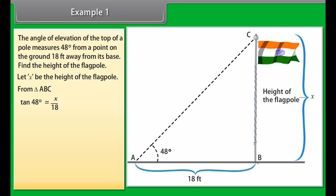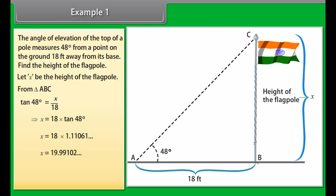This implies that x is equal to 18 × tan 48°, which equals 18 × 1.11061…, which is equal to 19.99102…, which equals approximately 20. So the flagpole is about 20 feet high.